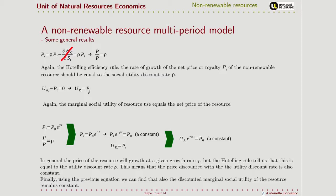We can consider the general formula for actualization of a value — in particular, of a price — given a growth rate γ. The Hotelling rule tells us that our growth rate is exactly ρ, so we can substitute ρ here. The Hotelling rule can then be stated in equivalent terms: the price at any given moment in time must equal the initial price actualized at the social utility discount rate, or equivalently, the discounted value of the price at any moment in time must be constant and equal to the initial price.